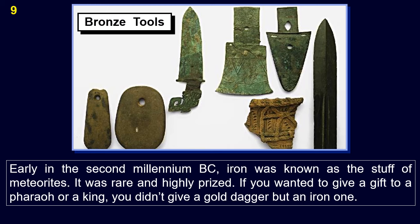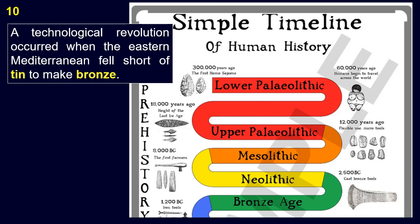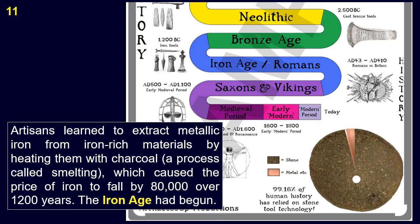Early in the 2nd millennium B.C., iron was known as the stuff of meteorites. It was rare and highly prized. If you wanted to give a gift to a pharaoh or a king, you didn't give a gold dagger but an iron one. A technological revolution occurred when the eastern Mediterranean fell short of tin to make bronze. Artisans learned to extract metallic iron from iron-rich materials by heating them with charcoal, a process called smelting, which caused the price of iron to fall by 80,000 over 1,200 years. The Iron Age had begun.